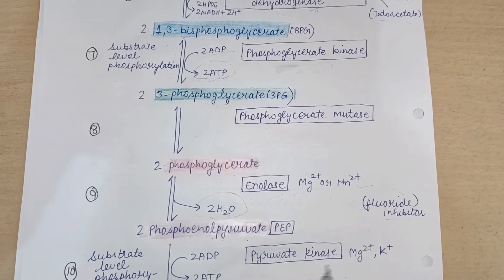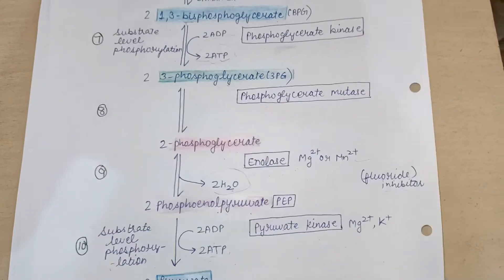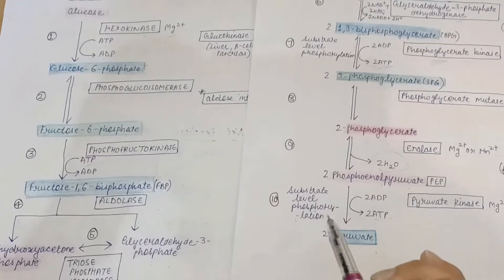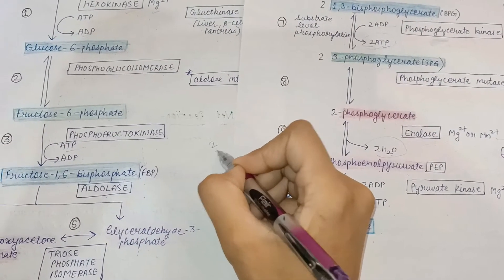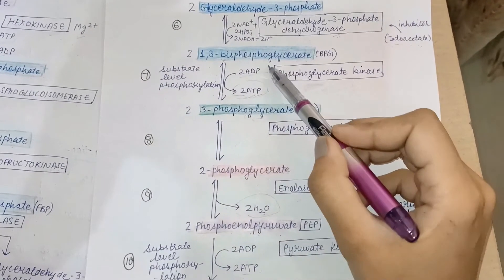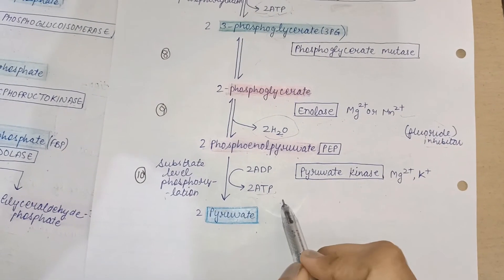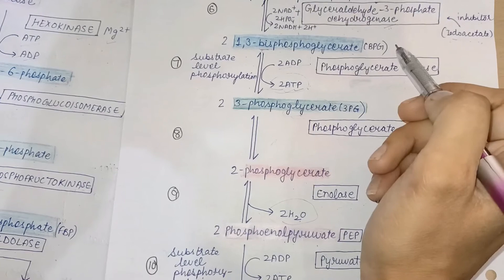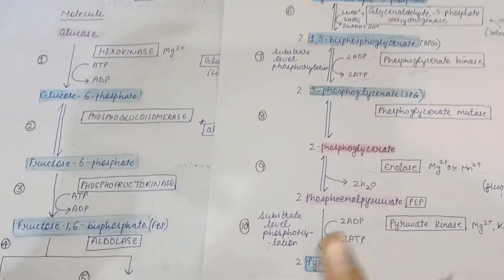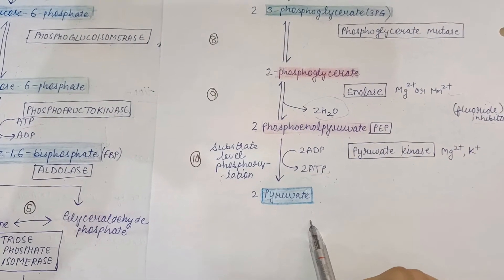Steps six through ten come under the payoff phase, also called the energy generation phase, because ATP is synthesized here. Overall, two ATP molecules are consumed in glycolysis and four ATP molecules are produced — giving a net gain of two ATP molecules, along with two NADH molecules and two pyruvate molecules.